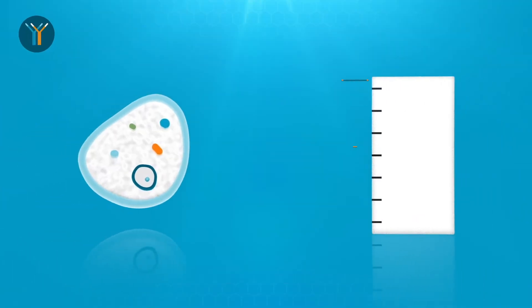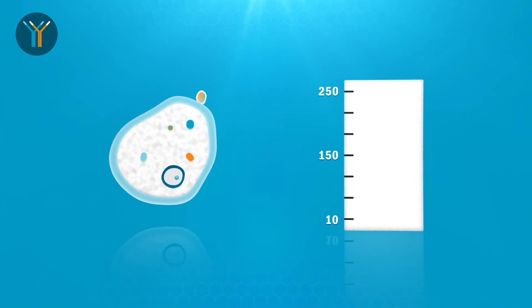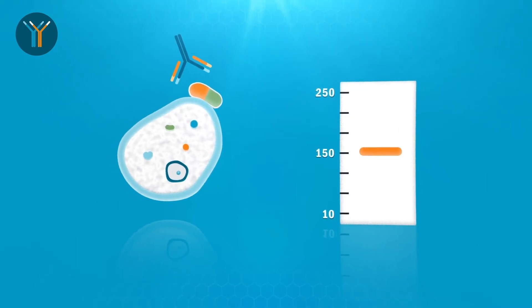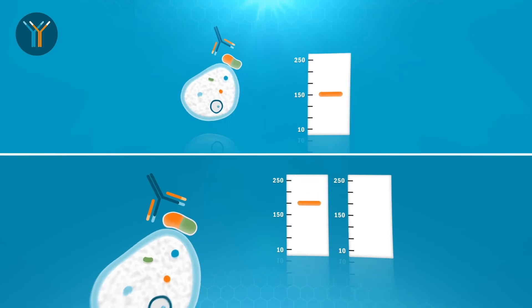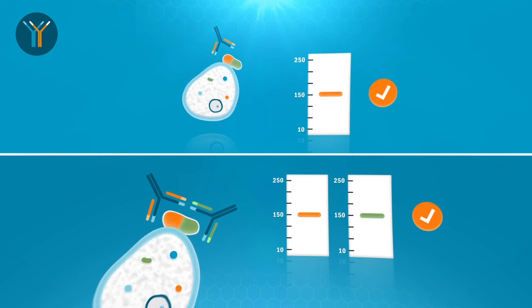In the independent antibody validation method, specificity of the antibody is proved by comparing two antibodies targeting different regions of the same protein. When the two antibodies generate a similar pattern, the antibodies validate each other.